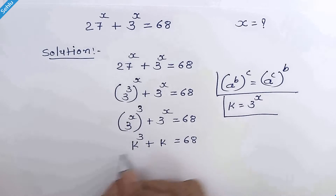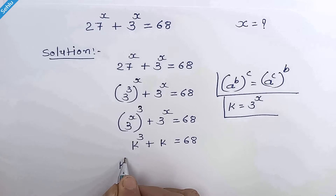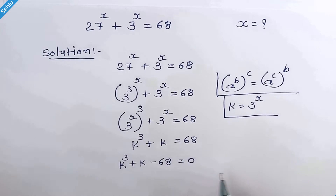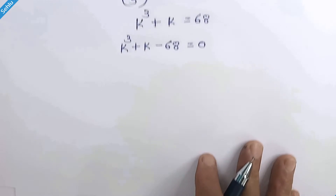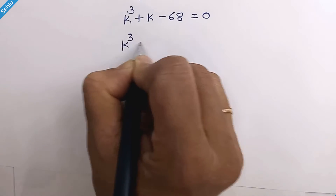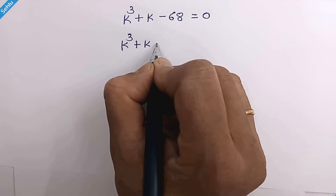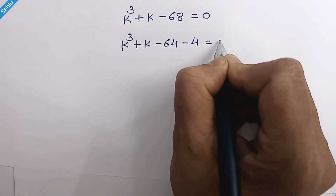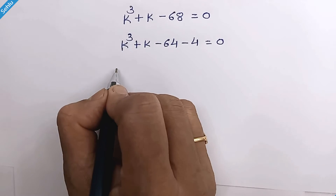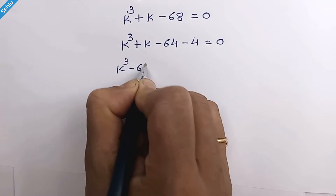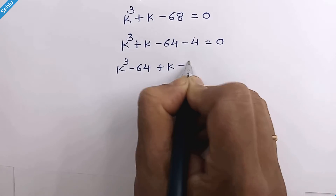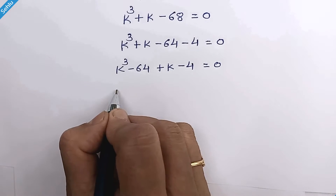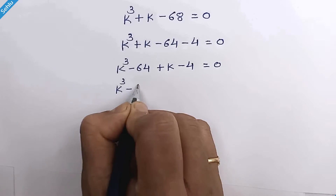Now let's move 68 to the left hand side. The equation will be k cubed plus k minus 68 is equal to 0. Negative 68 can be written as negative 64 minus 4. Let's rearrange: it will be k cubed minus 64 plus k minus 4 is equal to 0. Since 64 is 4 cubed, we can write k cubed minus 4 cubed.